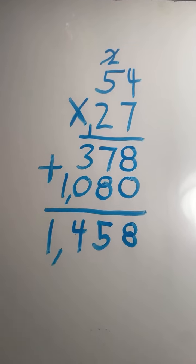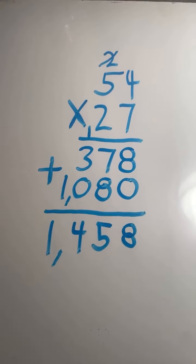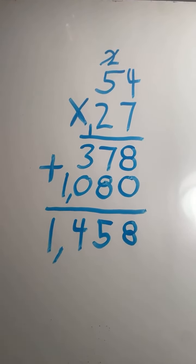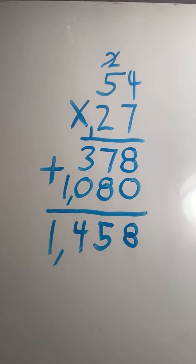And we have our final answer. 54 times 27 equals 1,458.